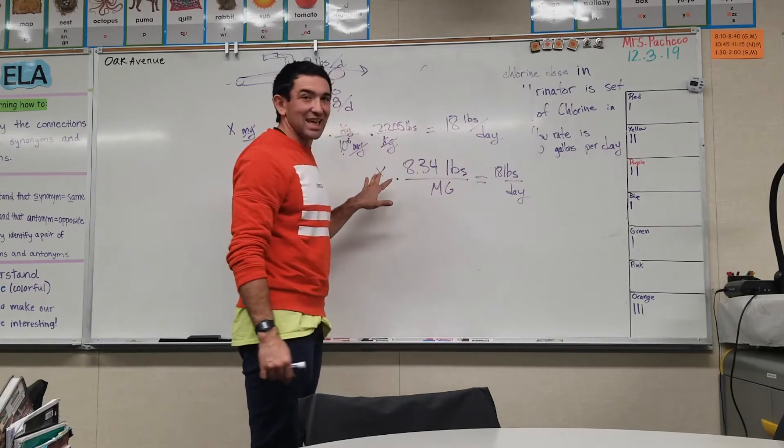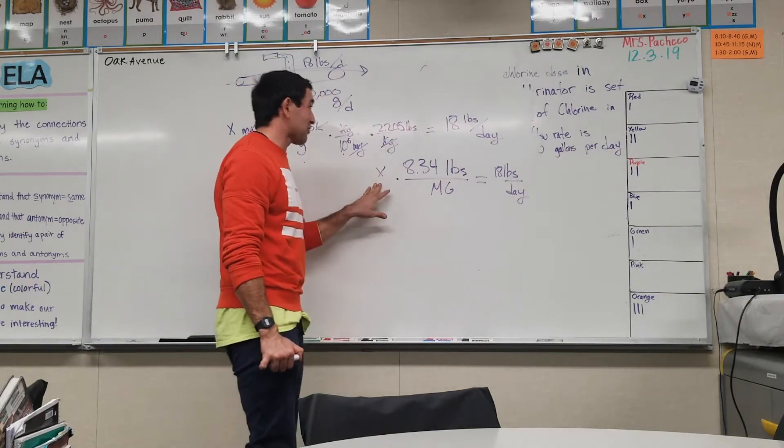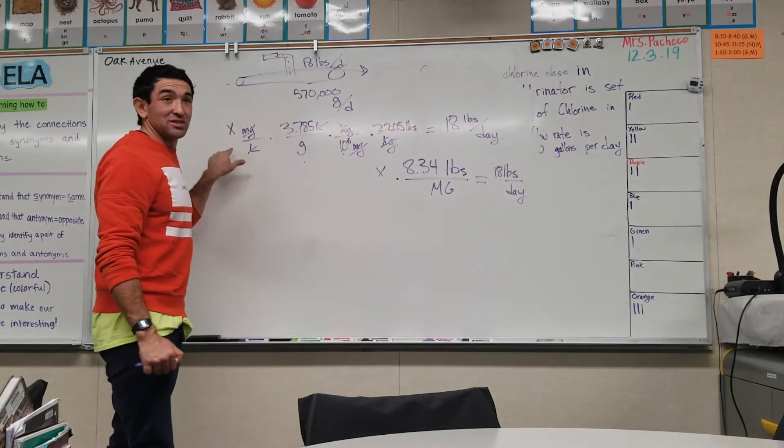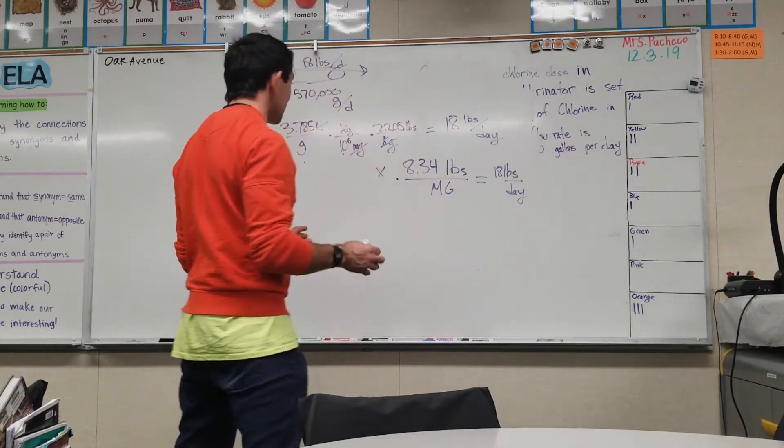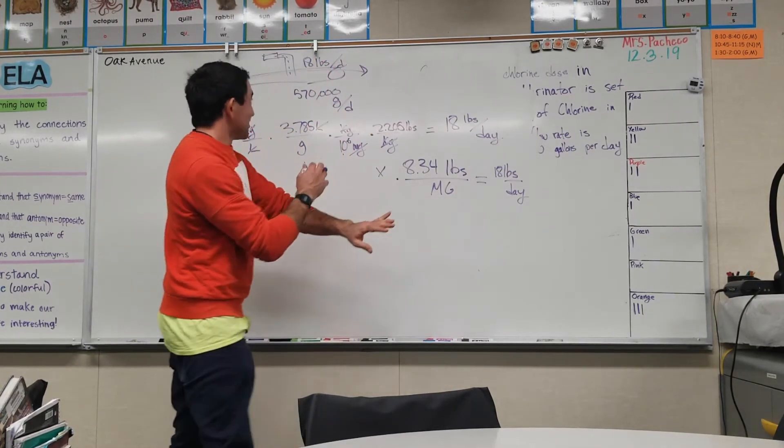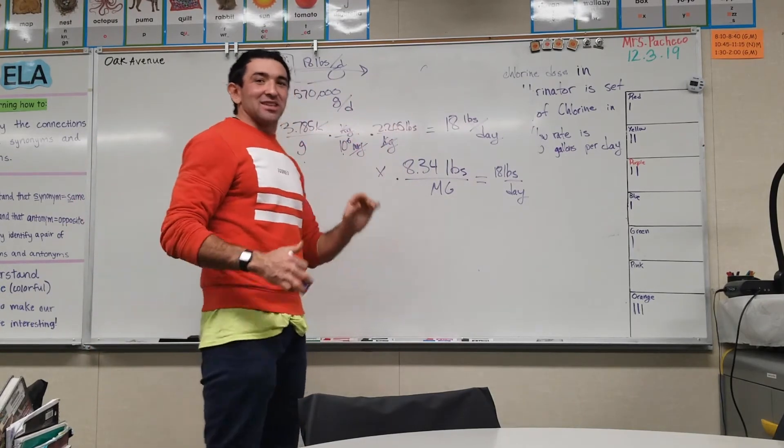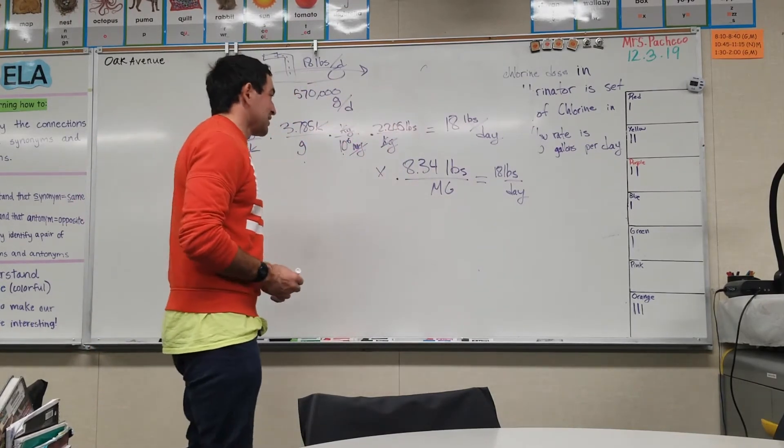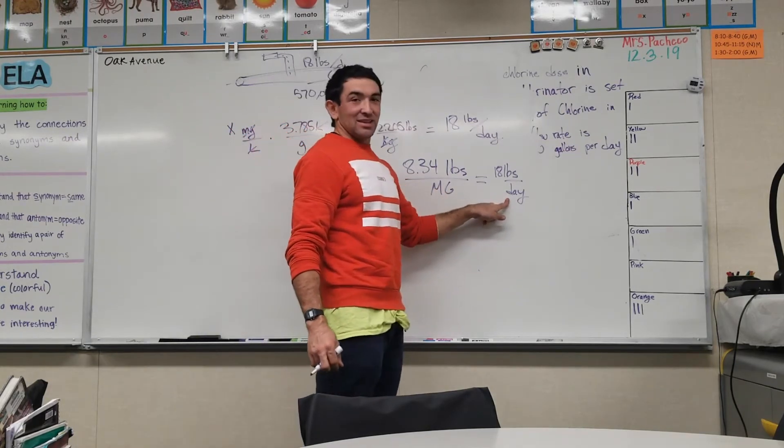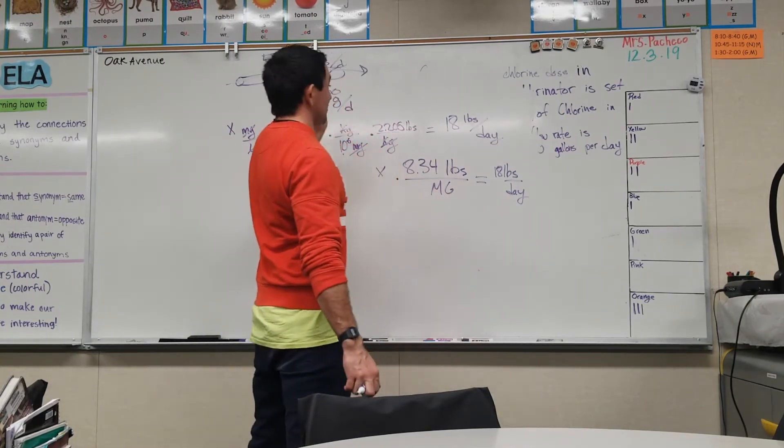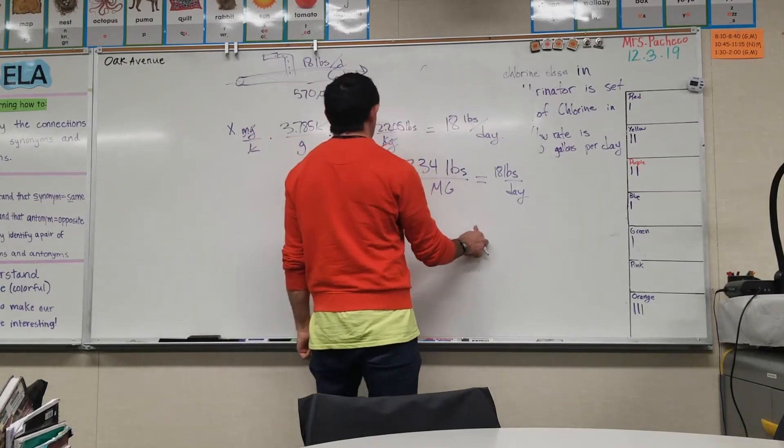What do we do? We got to figure something out to make it the same so that they could all cancel out and we're just left with a clean x. When we know that x value, we can just plug it in and we'll know that that's the milligrams per liter. We know that there's 570 thousand gallons flowing per day, so we could turn that day to million gallons. It's 0.57 million gallons.